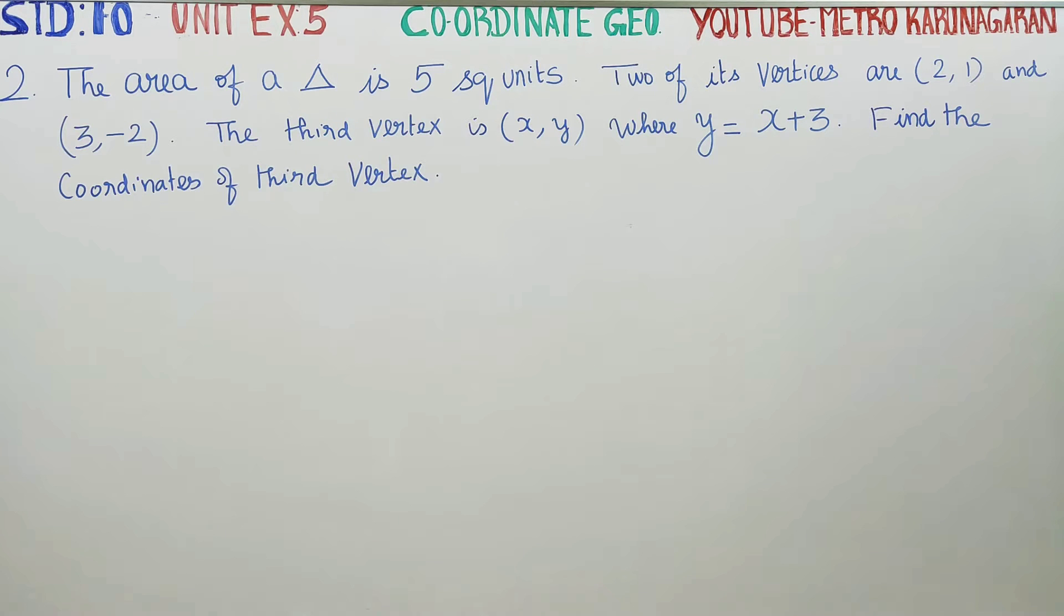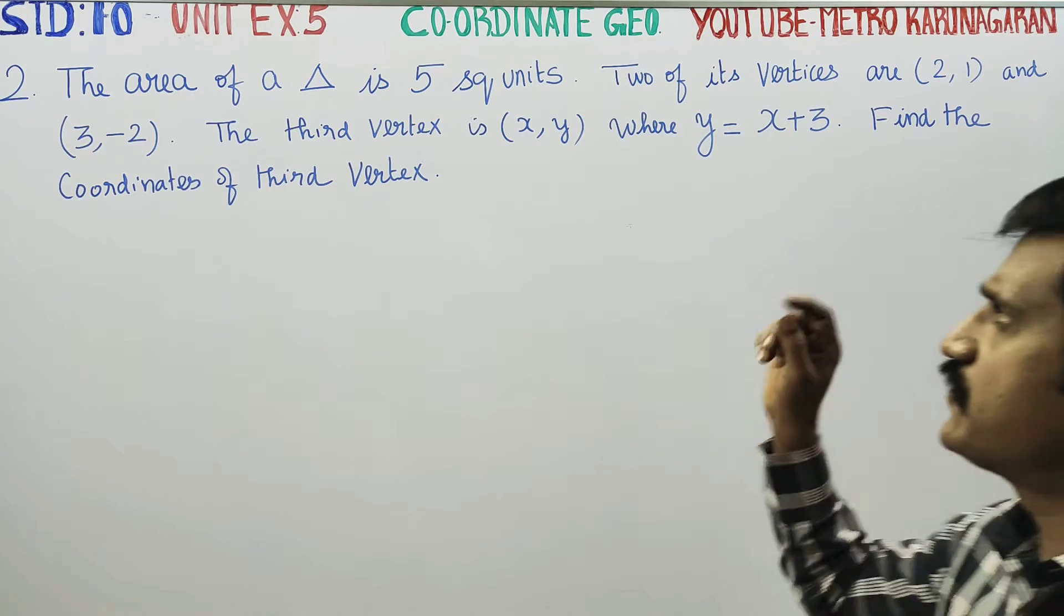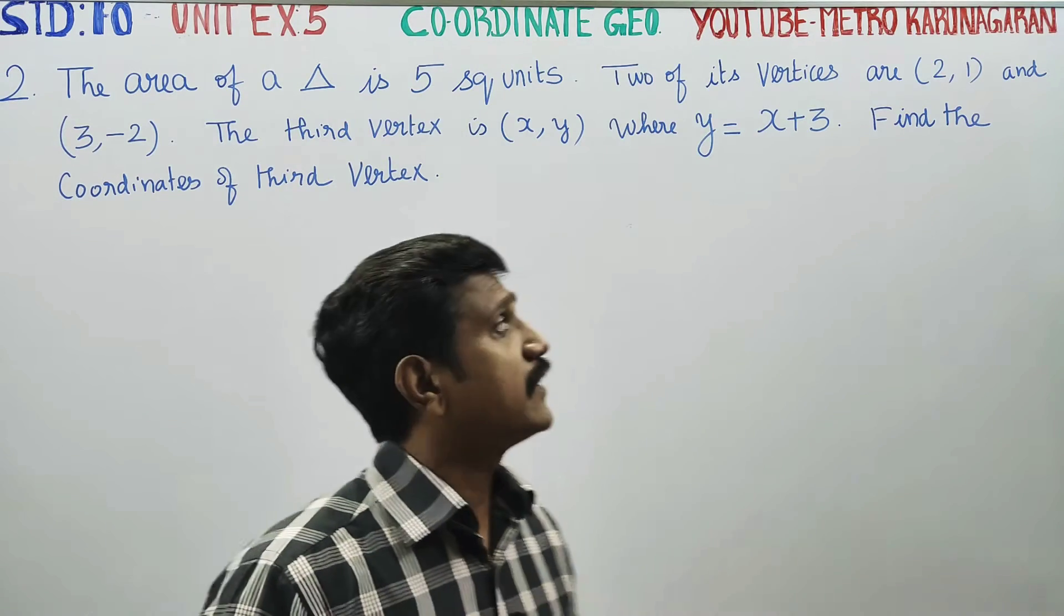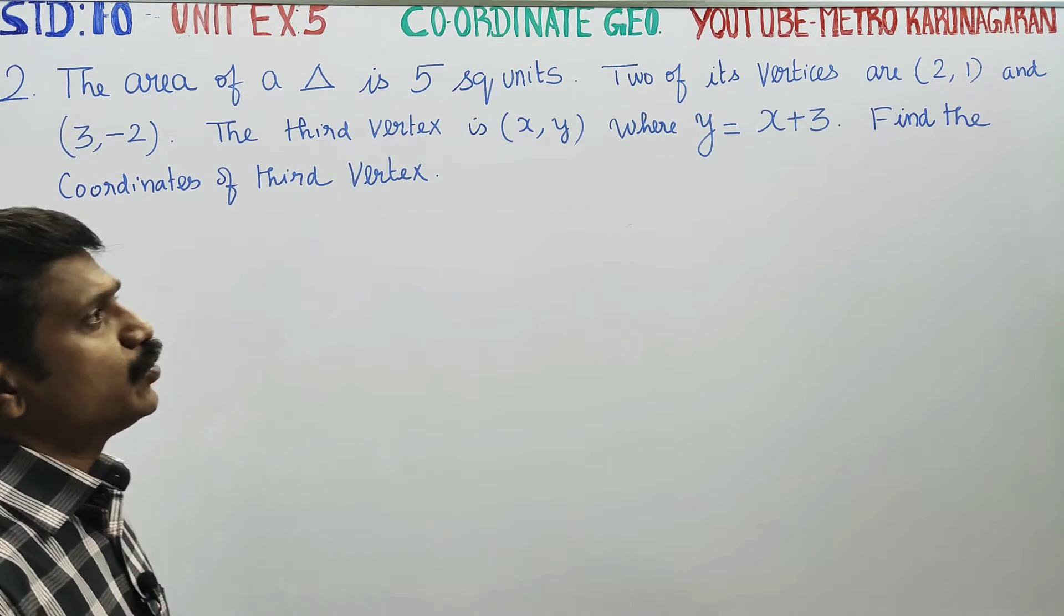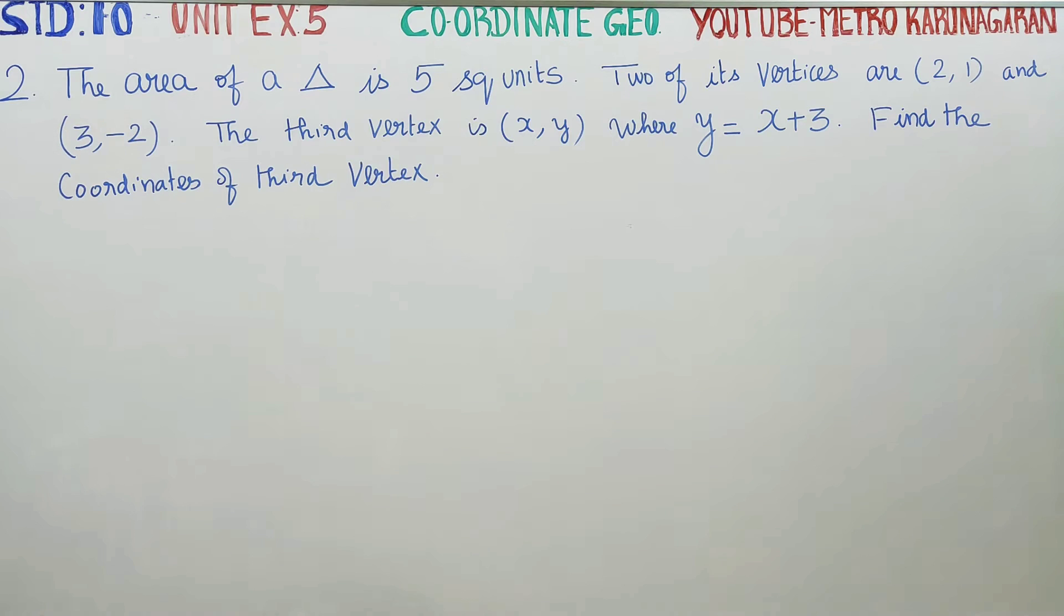The area of triangle is 5 square units. Two of its vertices are (2,1) and (3,-2). The third vertex is (x,y) where y is equal to x plus 3. Find the coordinates of the third vertex.